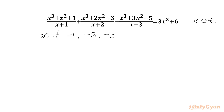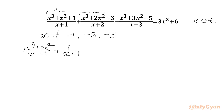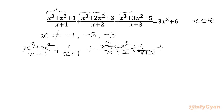Now we will write our equation: (x³ + x²)/(x+1) + 1/(x+1). We have split our numerator with respect to these two terms and our constant. So the second term can be written as (x³ + 2x²)/(x+2) + 3/(x+2). Now we will split with respect to (x³ + 3x²)/(x+3) + 5/(x+3).